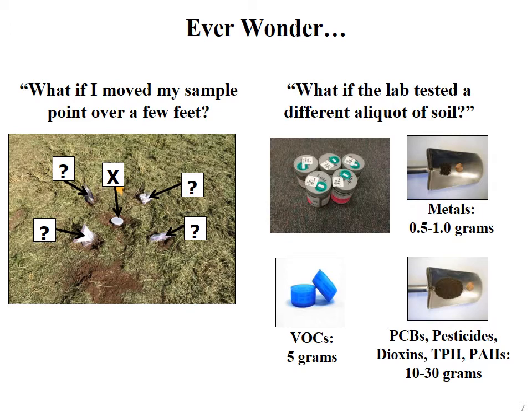Something that struck me when I started looking at this in more detail: for metals, laboratories only test a half a gram to one gram of soil — just a pinch, as shown in the figure compared to a penny. For comparison, a pack of sugar in a restaurant has two to four grams of sugar in it. So imagine that tiny mass of soil the lab is testing — what's the chance it's really representative of the area where you collected it, much less the soil in the jar you sent them?